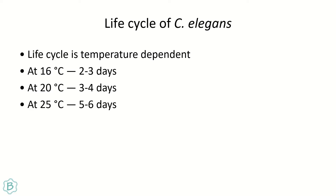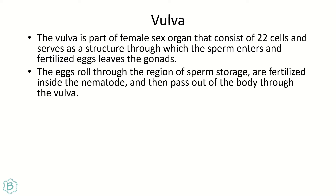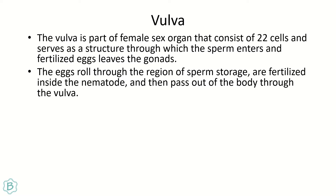The vulva is basically a part of the female sex organ, consisting of 22 cells. It is the structure through which sperm enters and fertilized eggs leave the gonad. Any cell producing gametes is known as a gonad. In vulva formation, eggs roll through the sperm storage region, are fertilized inside the nematode, and then pass out through the vulva.